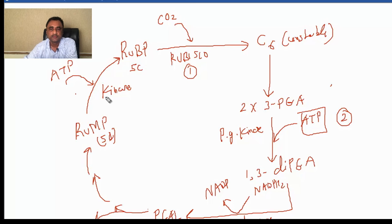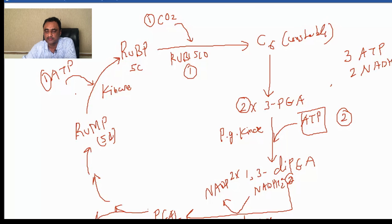Looking at the total ATP utilization, 2 ATP molecules are used in phosphorylation and 1 ATP in regeneration. So the fixation of 1 molecule of CO2 requires 3 ATP. At the same time, 2 molecules of PGAL are formed, meaning 2 NADPH2 are required. Altogether, 2 NADPH2 are required for the fixation of 1 molecule of CO2.